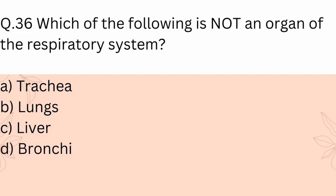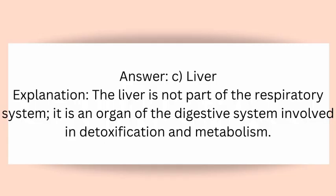Question 36: Which of the following is not an organ of the respiratory system? A) Trachea, B) Lungs, C) Liver, D) Bronchi. Answer: C) Liver. Explanation: The liver is not part of the respiratory system; it is an organ of the digestive system involved in detoxification and metabolism.